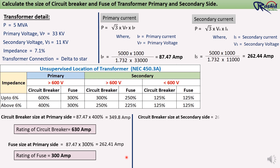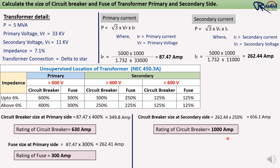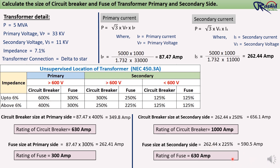Circuit breaker size at the secondary side = 262.44 × 250% = 656.1 ampere, since the secondary voltage is more than 600 V. So the breaker size will be 1000 ampere. For the fuse, multiplying 225% by the secondary current: 262.44 × 225% = 590.5 ampere. The fuse size we will use here is 630 ampere for the secondary side of the transformer.